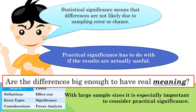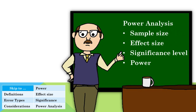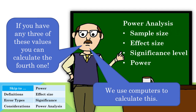It may help to consider the effect size, among other things, to answer this question. A power analysis is most often used to calculate what sample size is needed. However, it can also be used to calculate sample size, effect size, significance level, or power if you have three of the four values. Since alpha is usually 0.05 and power is usually 0.8, researchers need to pay the most attention to the effect size in order to calculate the needed sample size.